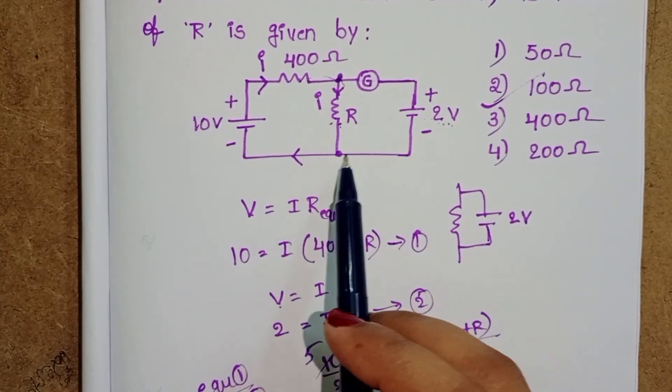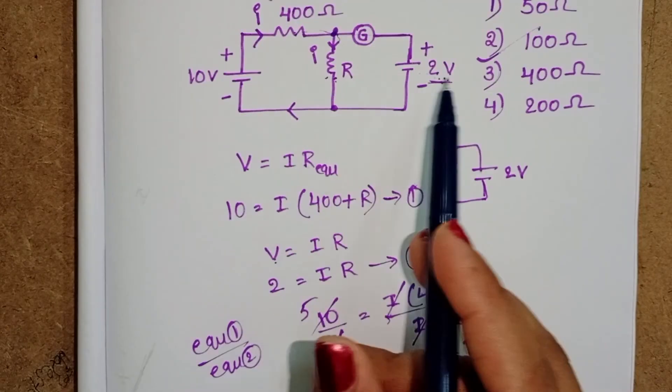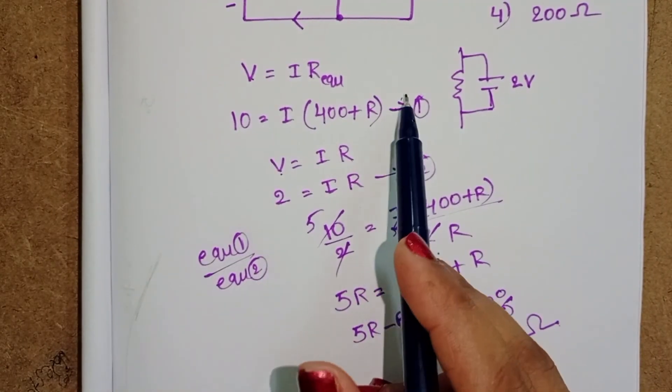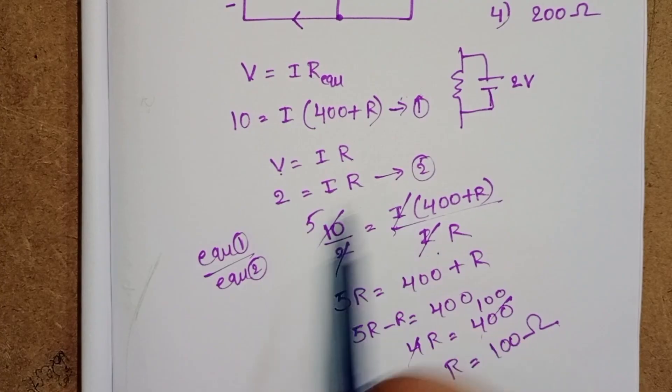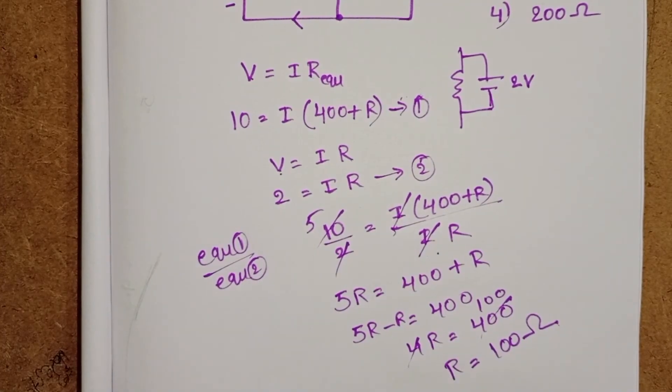Potential difference across these two terminal points is equals to 2 volt. By using this, we get two equations. And when we simplify these two equations, resistance is equals to 100 ohm.